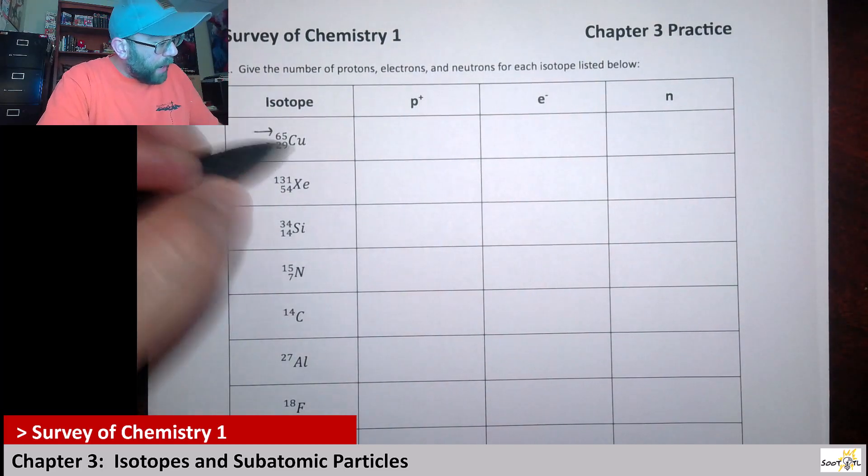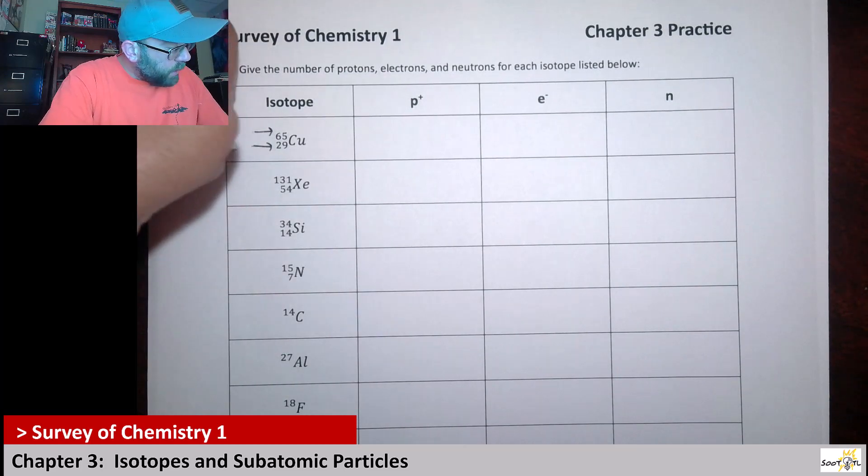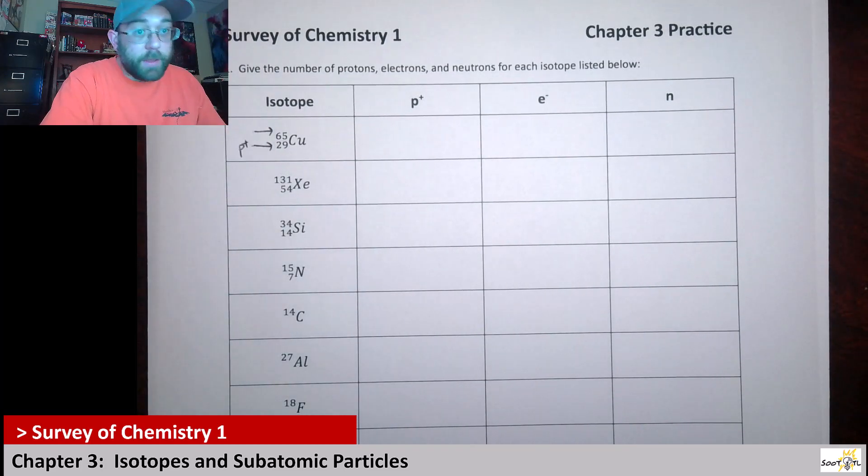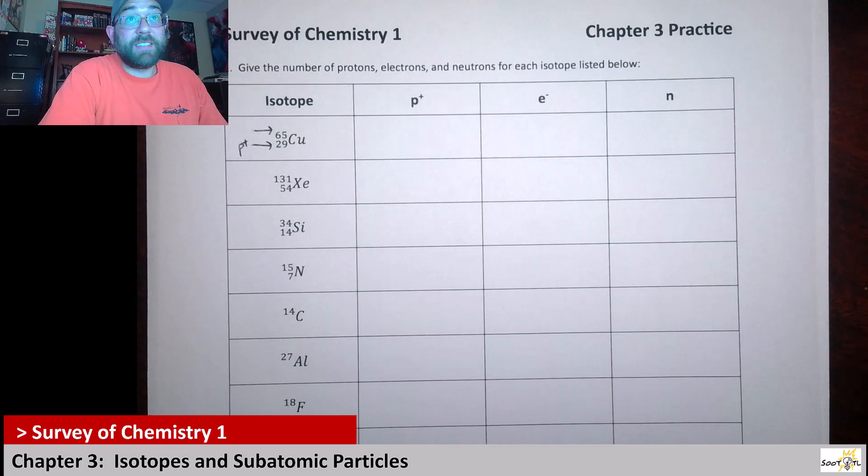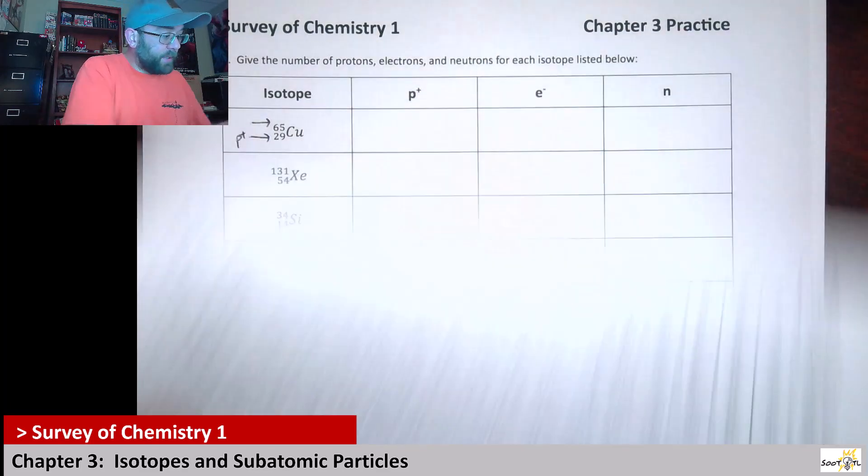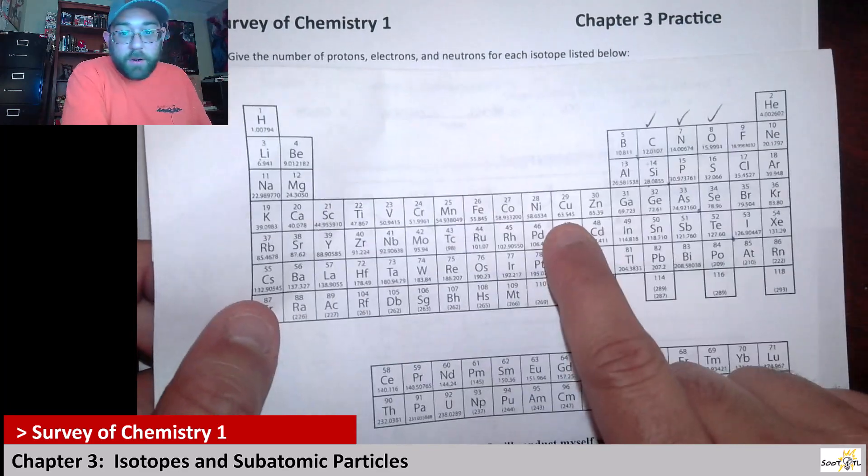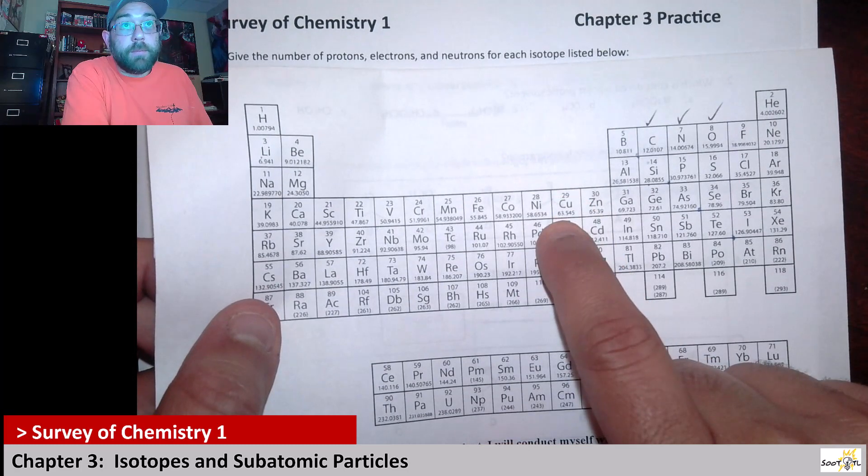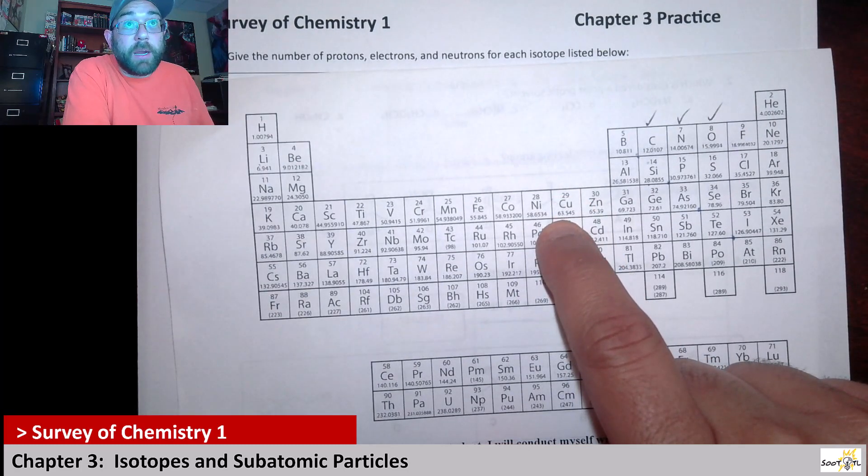This bottom number is always the number of protons. That's the identity. Technically this number is not needed if we have the symbol. For instance, copper, it's a transition metal right here.